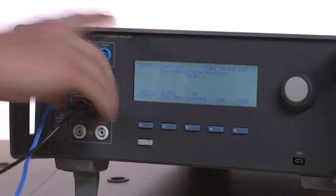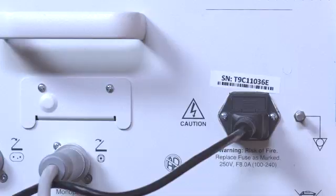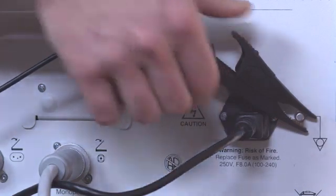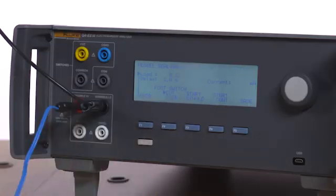Connect the black test lead from the variable low port on the QAES 3 to an alligator clip and attach it to the ground lug on the rear chassis of the Force Triad. Press F2 on the QAES 3 to enter vessel sealing mode.